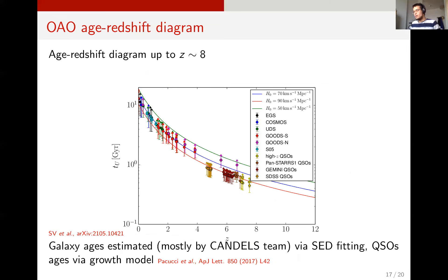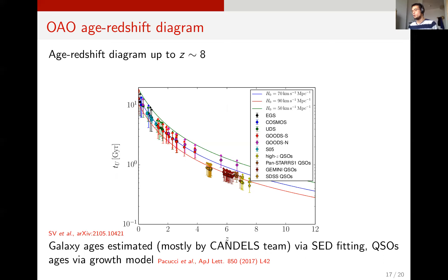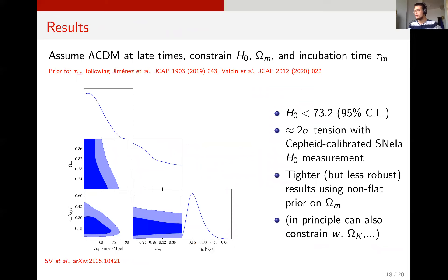We constructed an age-redshift diagram of old astrophysical objects up to roughly redshift 8. There's a slight complication in that these objects don't form at the Big Bang — they form sometime after. This delay time between the objects forming and the Big Bang is called the incubation time, and you have to marginalize over it. What we did was assume Lambda CDM at late times to perform this consistency test, with a three-parameter model determined by H0, omega_m, and the incubation time.